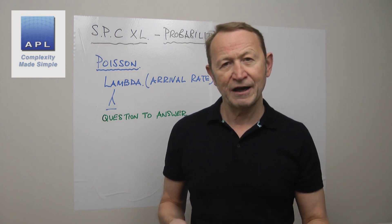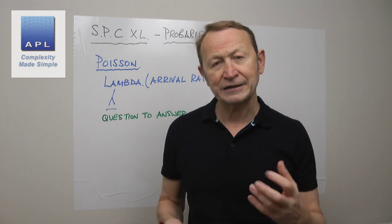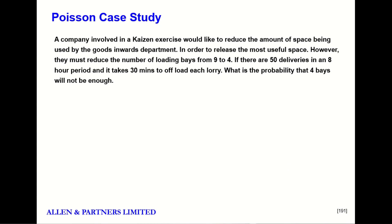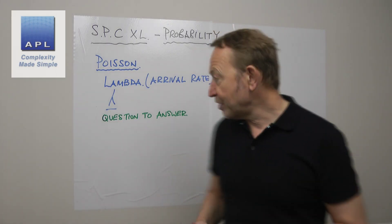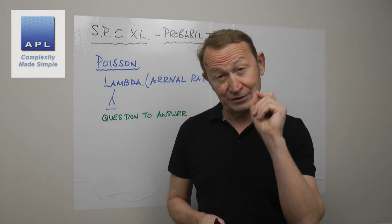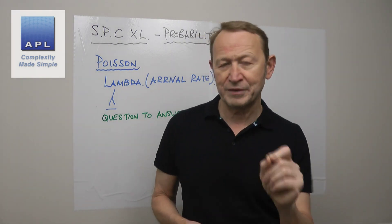We've got a company involved in a case study exercise. They're trying to save space in a warehouse. The issue is that in order to save space in the goods-inwards department, they must reduce the number of loading bays from nine to four. If there are 50 deliveries in an eight-hour period and it takes 30 minutes to offload each lorry, what's the probability that four bays will not be enough?